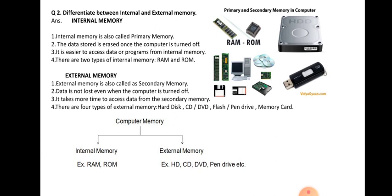External memory is also called secondary memory. Data is not lost even when the computer is turned off. It takes more time to access data from the secondary memory. There are four types of external memory: Hard disk, CD, DVD, flash pen drive, and memory card.